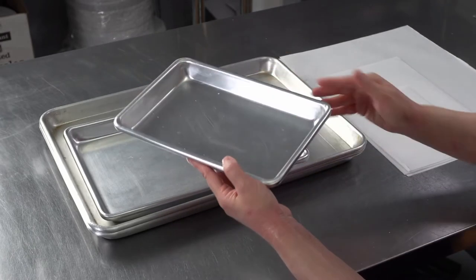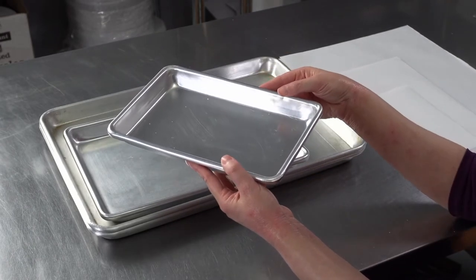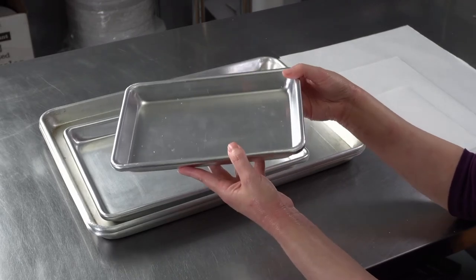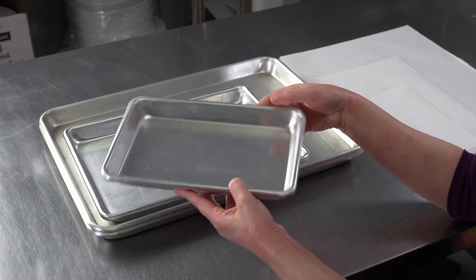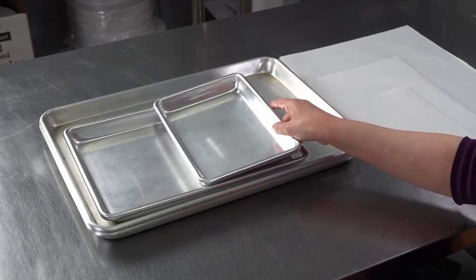The rolled edge will keep it from warping, so you get nice life out of these pans too. They're easily washed with warm soap and water, and the sizes allow you to do a lot of things.